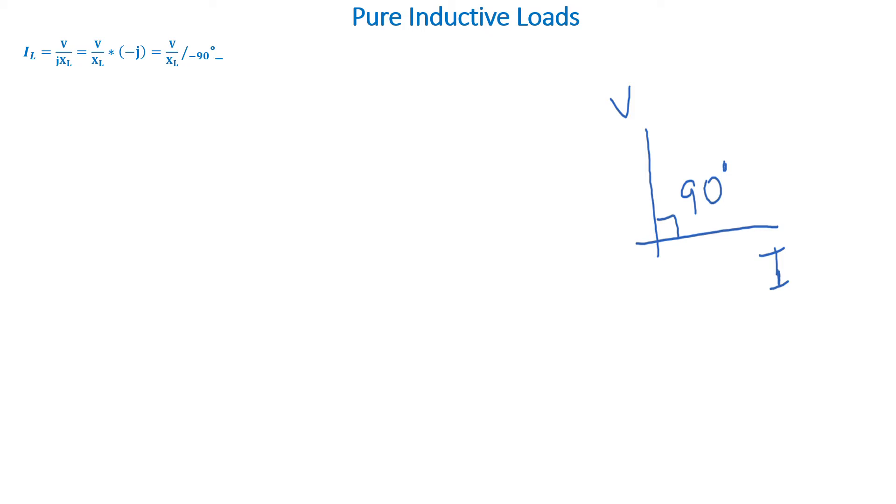The current lags the voltage by 90 degrees. So the simple graph to the right shows this relationship: the current lags the voltage by 90 degrees.